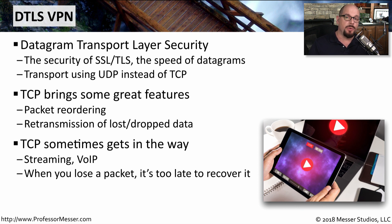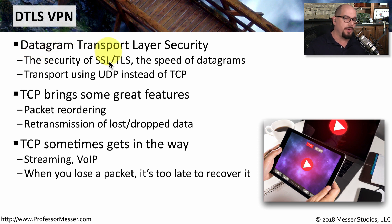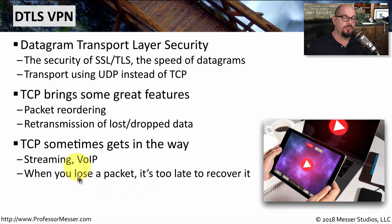In those situations, you may want to use a DTLS VPN, which is Datagram Transport Layer Security. This uses UDP packets instead of TCP. DTLS would be a good choice for real-time streaming or Voice over IP protocols, where if any data is lost along the way, it's too late to back up and recover that information.